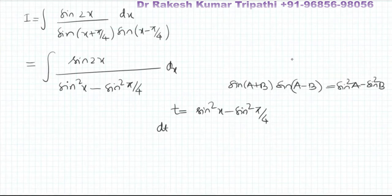If we wish to substitute, now on differentiating both sides with respect to x, the derivative of sin²x will be 2·sin(x)·cos(x). The derivative of sin²(π/4) will be zero being a constant. It is very clear that 2·sin(x)·cos(x) is sin(2x).